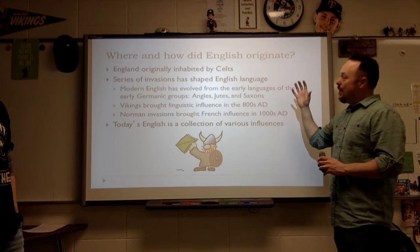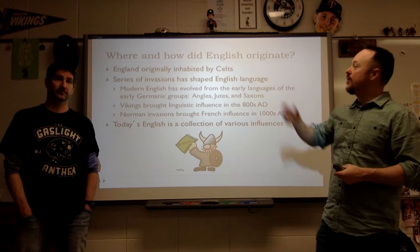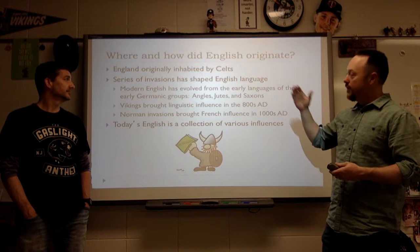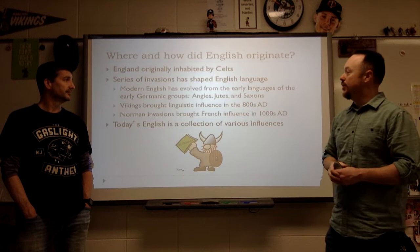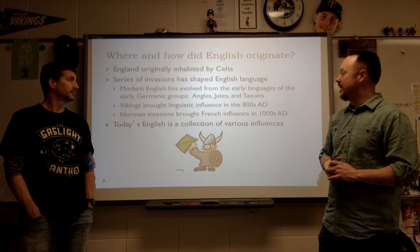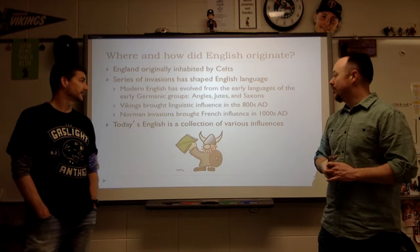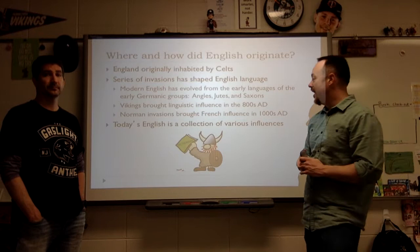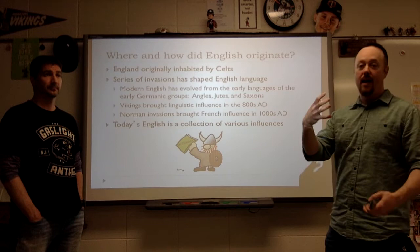If we look at where and how English actually originated, it's kind of a hodgepodge of a language. It starts out in England, where the inhabitants are the Celts. Through different invasions from groups across Europe, the English language was shaped greatly. Modern English evolved from the languages of the Germanic peoples — the Angles, Jutes, and Saxons. The Vikings, or Danes, brought their linguistic influence around the 800s, and then the Normans from northern France invaded and brought their influence as well. English has continued to be influenced, including by America today.